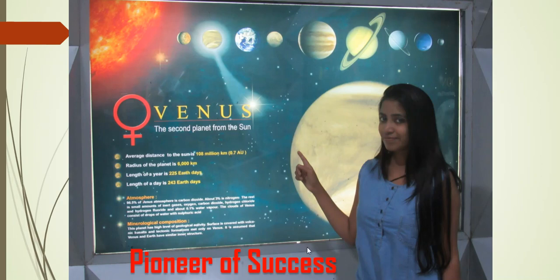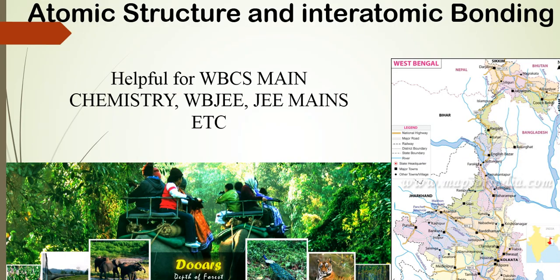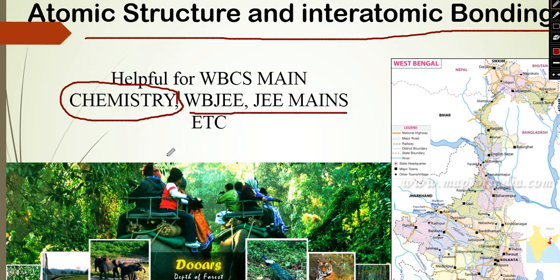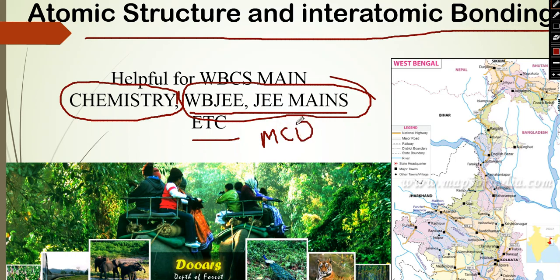Hello friends, welcome to Pioneer of Success, an online free educational institute. We are continuing with the chemistry series, and today we will be discussing atomic structure and interatomic bonding. This video is made for WBCS Main chemistry. If you are appearing for WBCS Main and have taken chemistry, our video series would be helpful. It is also helpful for WBJE and JE Mains for clearing concepts, but for those two examinations this video alone is not sufficient — we will be uploading more videos solving MCQ and numerical problems.